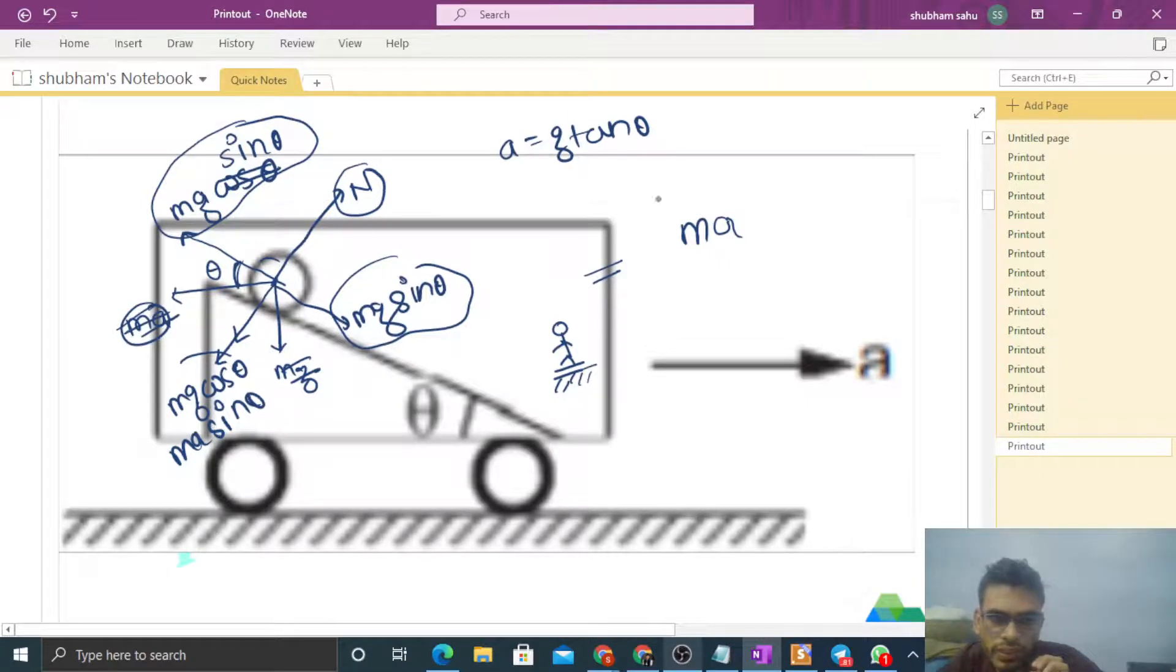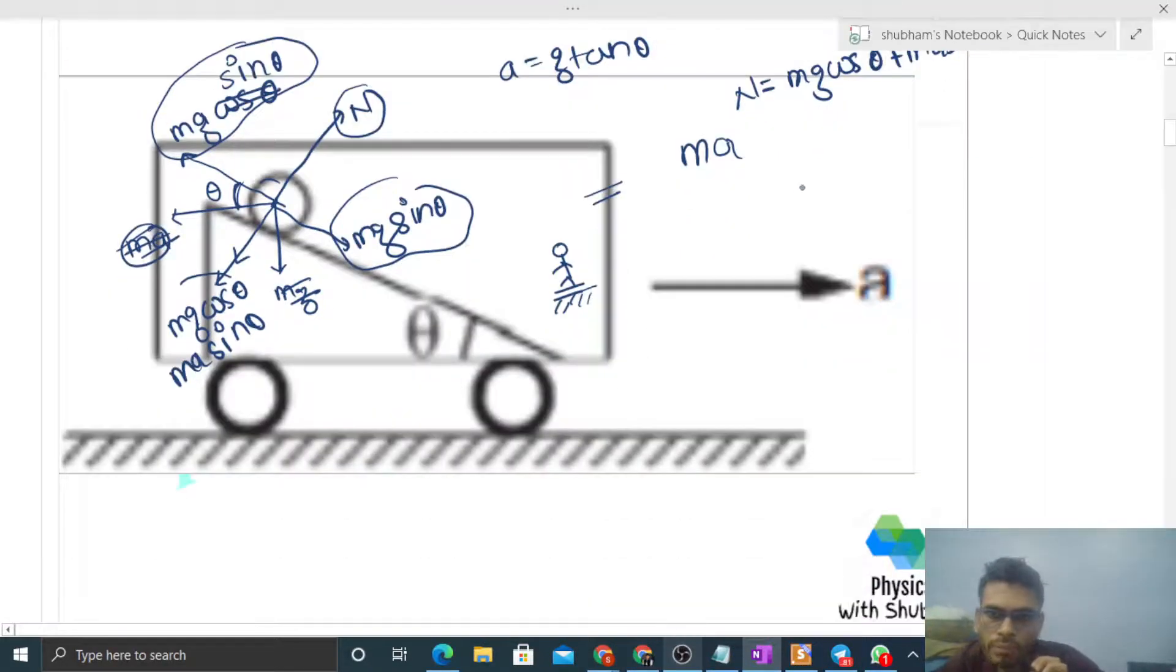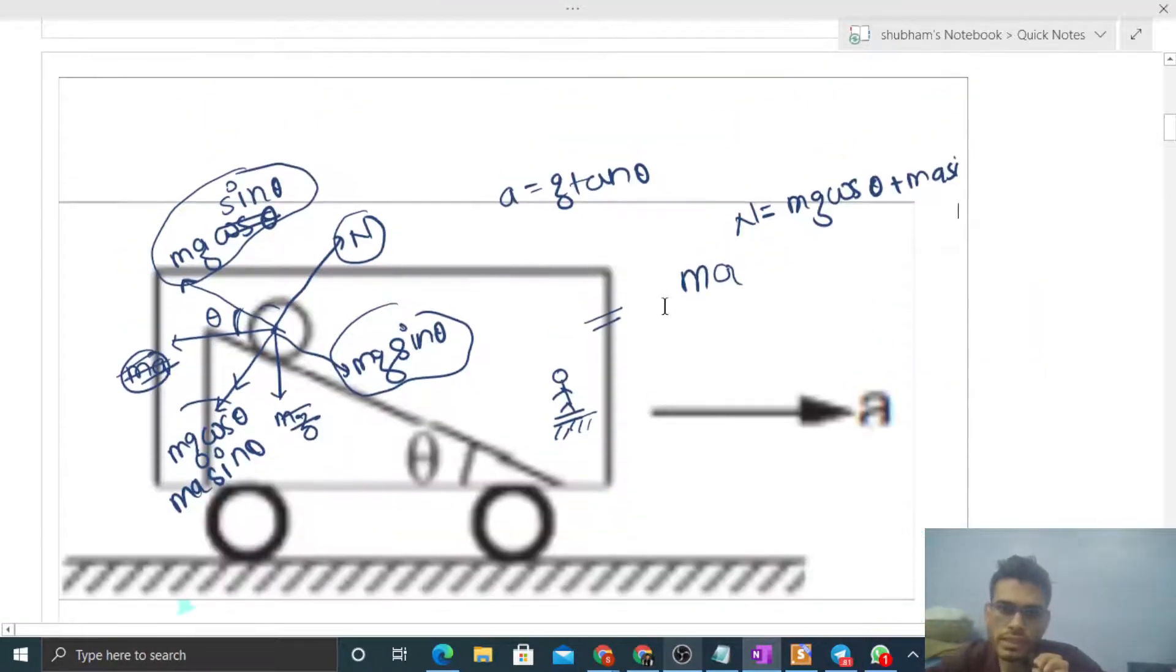The perpendicular components—normal reaction will balance them. Like mg cos theta plus ma sin theta equals normal reaction. So we can say the net force on this sphere is zero. If net force is zero, then acceleration of center of mass will be zero.